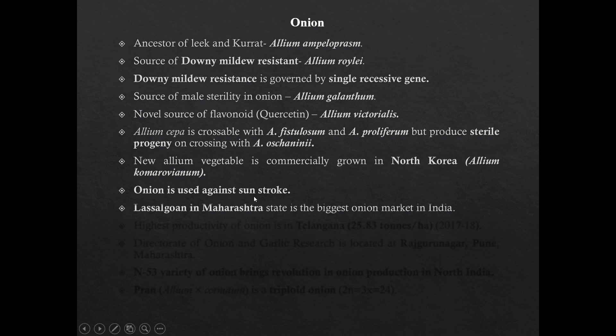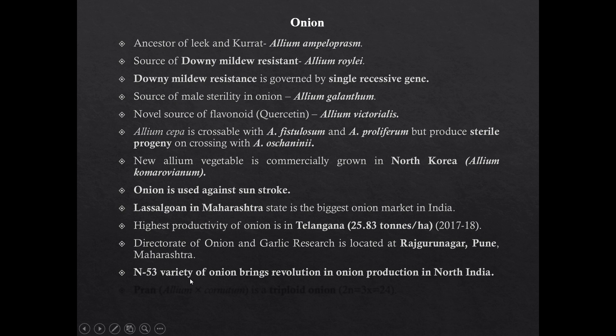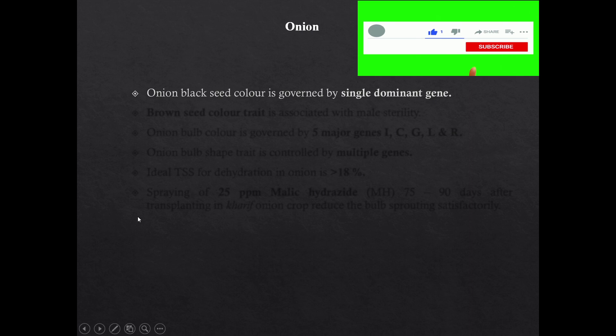A new Allium vegetable grown commercially in North Korea is Allium komarovianum. Onion is used against sunstroke. Lasalgaon in Maharashtra is the biggest onion market in India. Highest productivity of onion is in Telangana, after that in Gujarat. Directorate of Onion and Garlic Research is located at Rajgurunagar, Pune. N53 variety of onion brought revolution in onion production in North India because it is suitable for kharif season cultivation. Pran is a triploid onion variety.